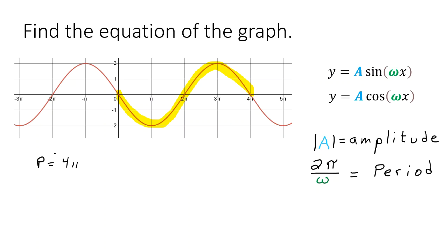So that's going to help me determine the omega. Should we just go ahead and do that? So here's the omega. So I know the period is two pi divided by omega and that's going to equal four pi.